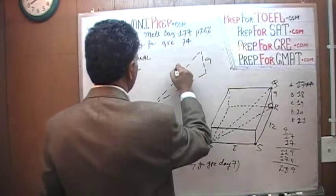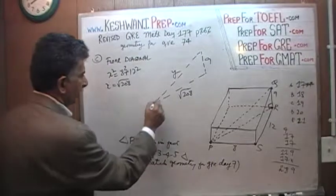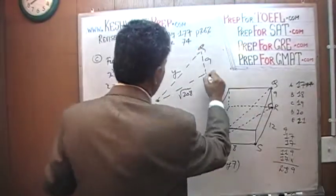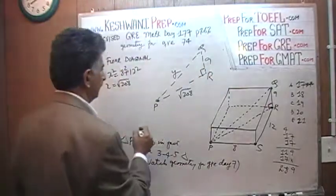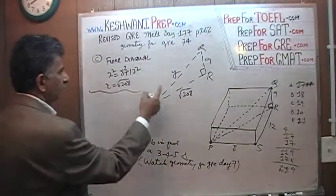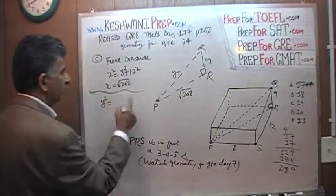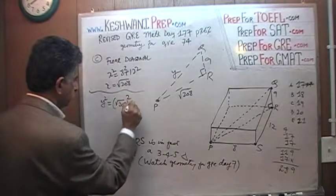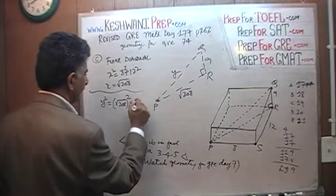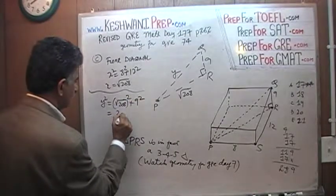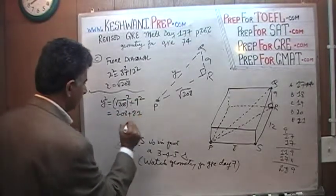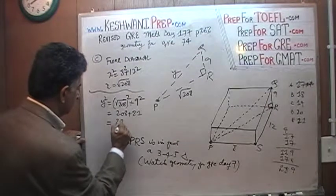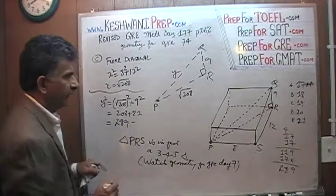Now we can figure out the distance from P to Q. The height now is 9. Y squared will equal the square of that quantity plus 9 squared, which is 208 plus 81. What do you know? It is in fact 289, same as before.